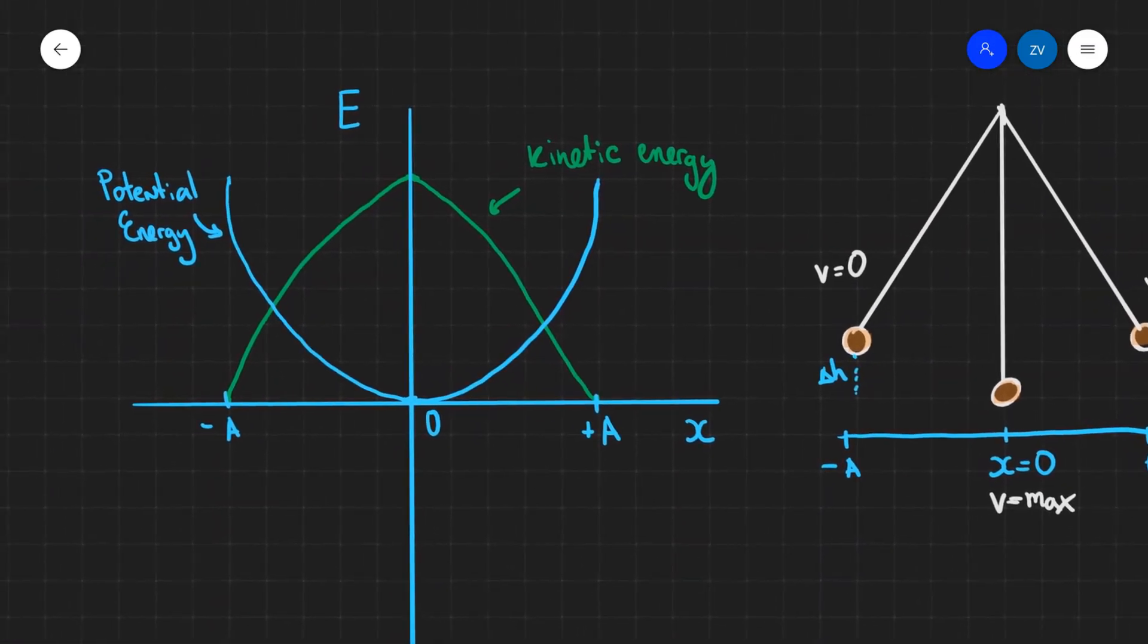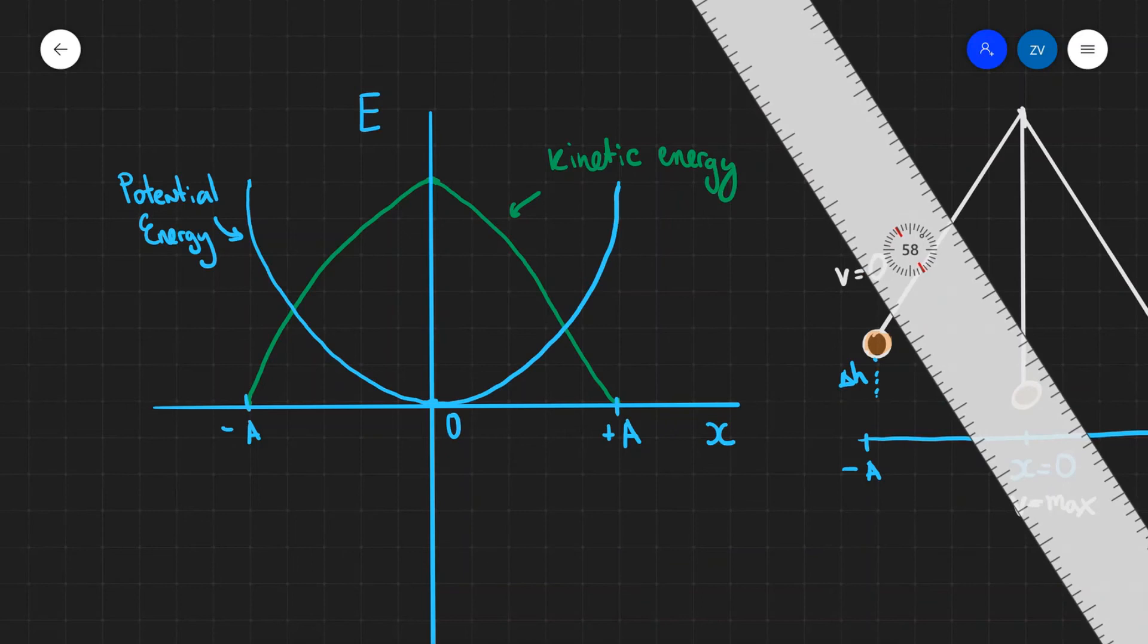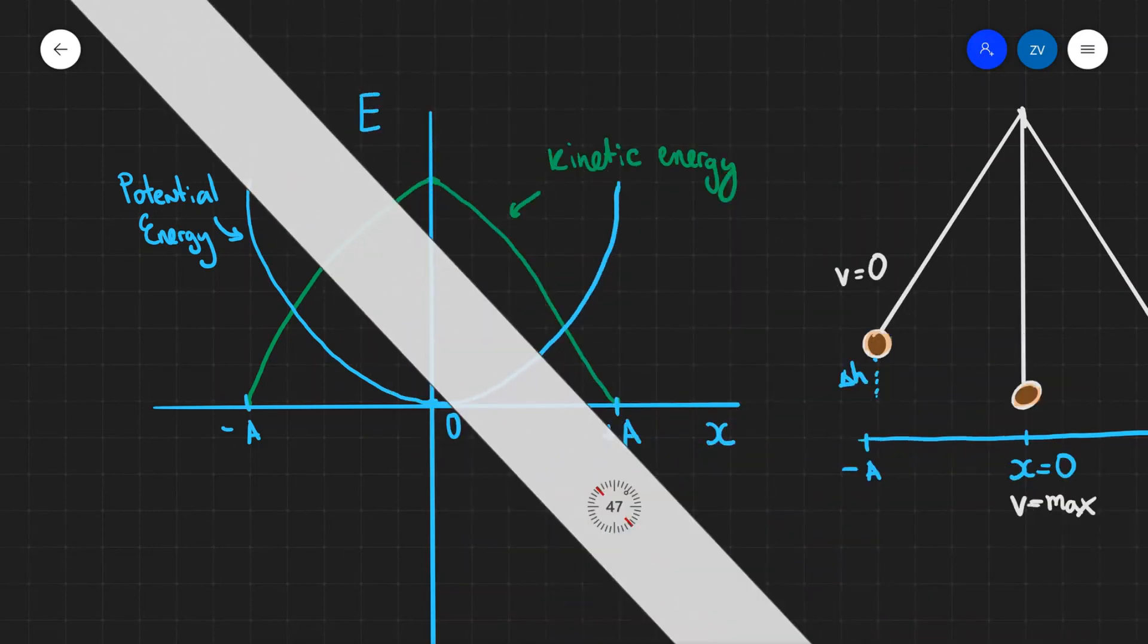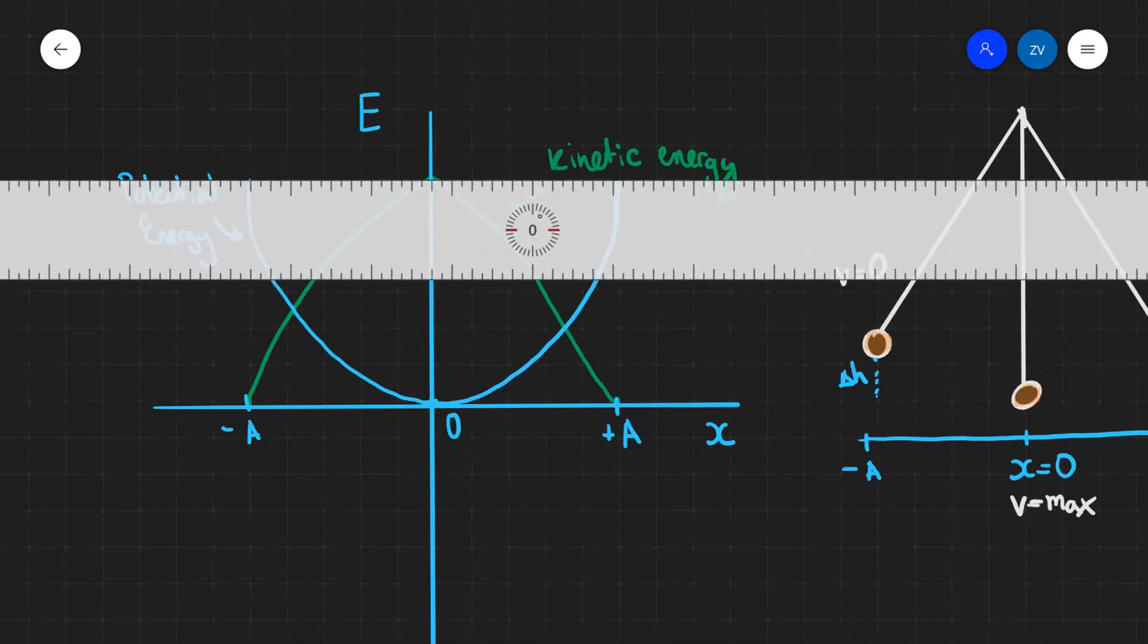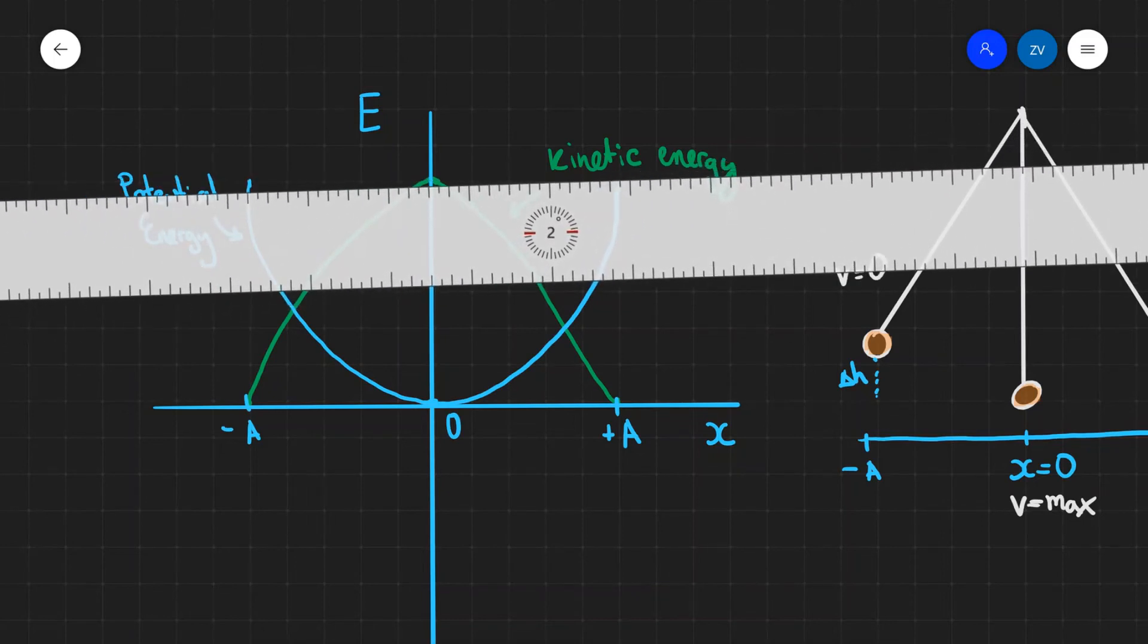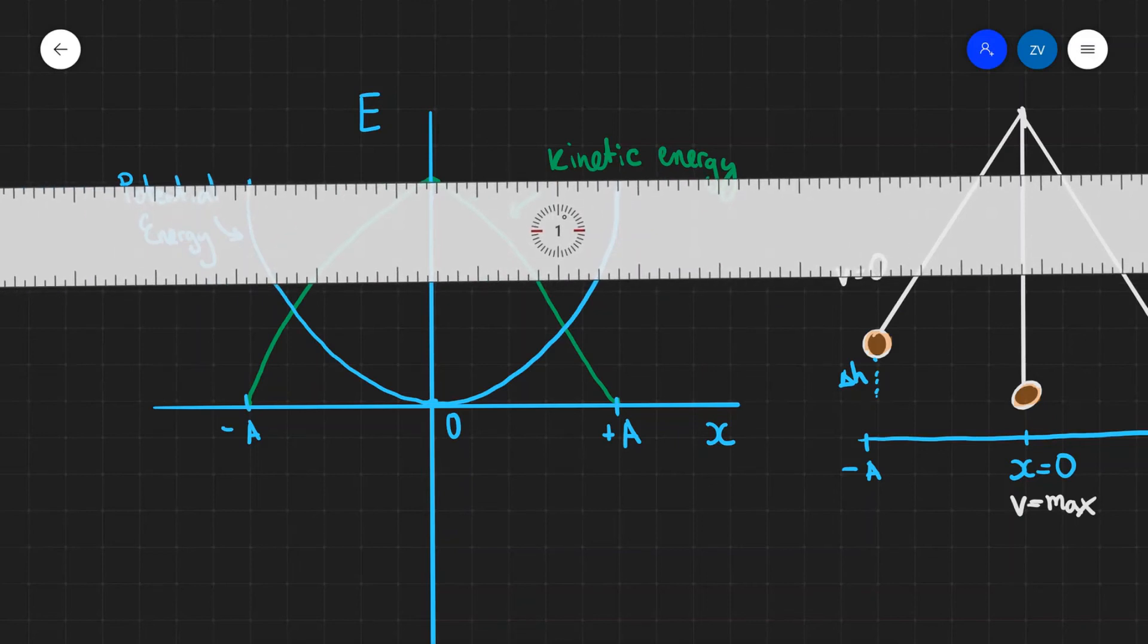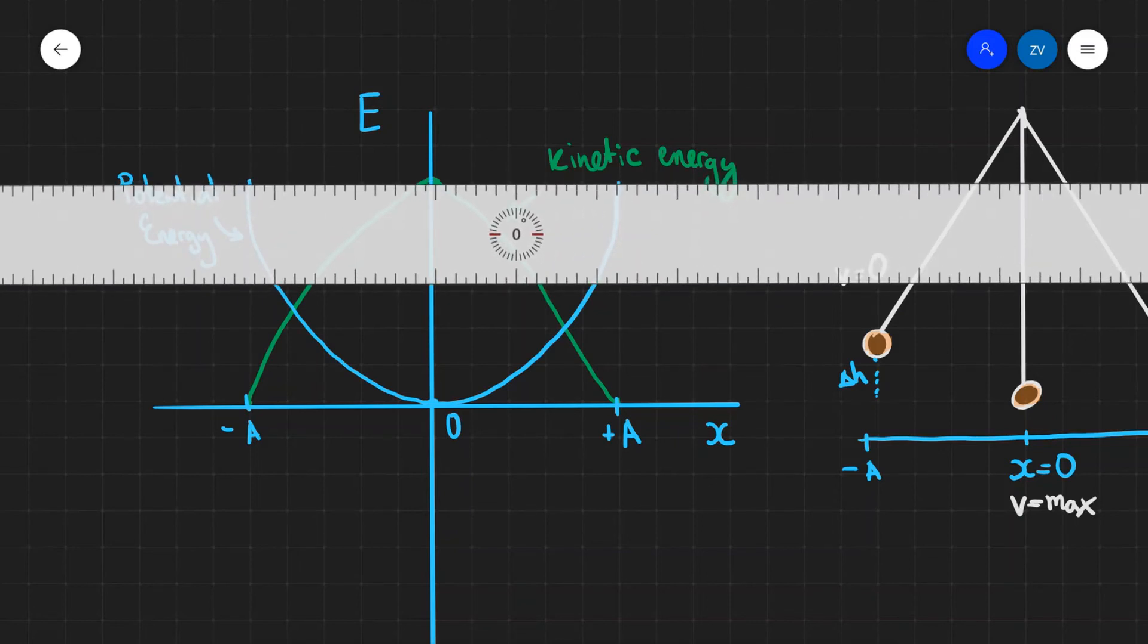Now notice that the principle of conservation of energy always holds in this graph. So at any point, if you were to add those two points, the total value will always be the same. And that will be equal to the total amount of energy in this system.